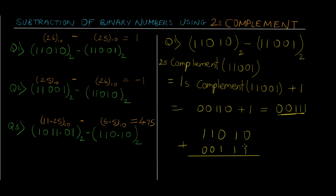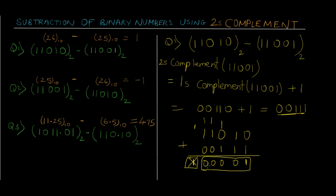Let's perform the addition: 0 plus 1 is 1; 1 plus 1 is 0 with a carry. If you don't know how to perform binary addition, I've already put a video on that so you can check it out. Continuing: 1 plus 1 gives 0 with a carry again; 1 plus 1 gives 0 with a carry; and lastly 1 plus 1 gives 0 with one more carry. This extra carry we just need to discard.